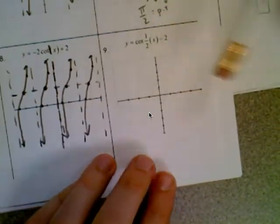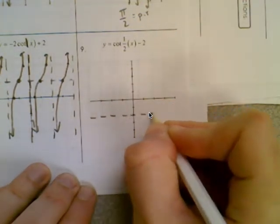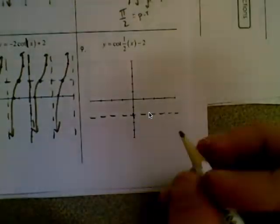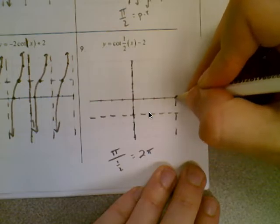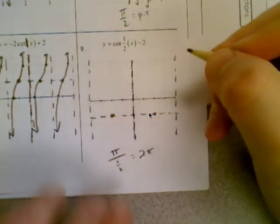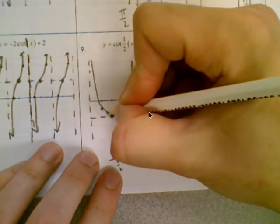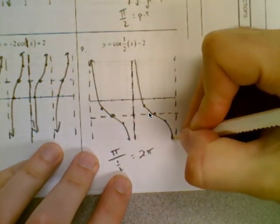Number 9: y equals cotangent of 1 half x minus 2. We have a vertical shift of down 2, no horizontal shift, so we start on the y-axis. Because it's cotangent, we have an asymptote there. The period is pi over b, which is 2 pi. So we have an asymptote 2 pi away in each direction. Halfway between we have points. Because it's cotangent the graph goes downward. The a value is 1, so we go 1 up and down from the midline.